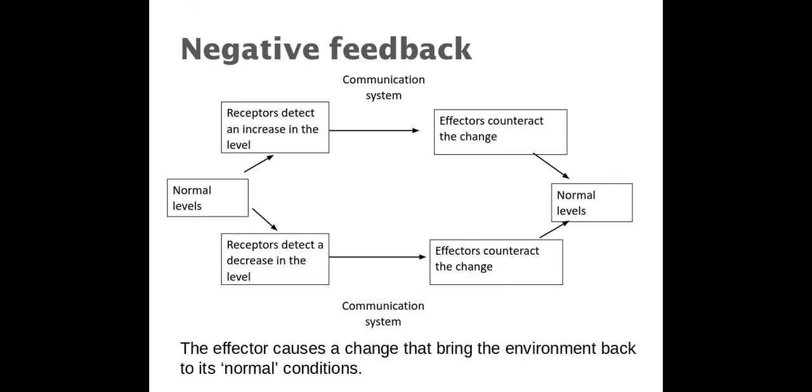So negative feedback. This is where an effector causes a change to bring about the internal environment back to its normal conditions. So in this particular case at the top here, a receptor detects an increase in this certain level, whether that be temperature or blood glucose or whatever. The effector then brings about the change and it brings it back down to that normal level. Equally the same on the other side. So the receptor detects a decrease, effector causes a change and brings it back to the normal level. So that's negative feedback.